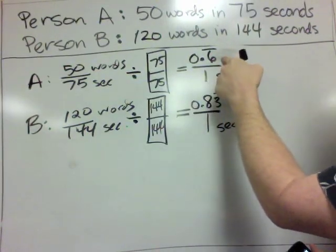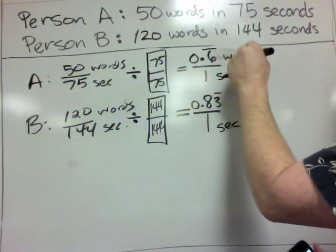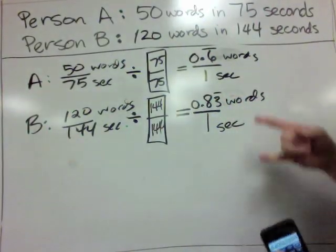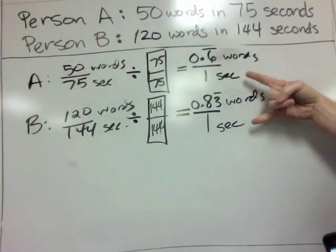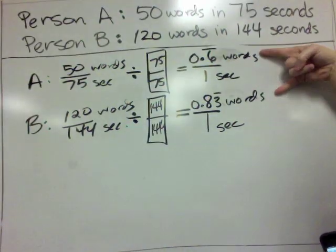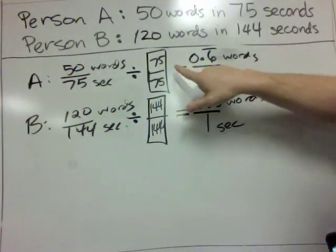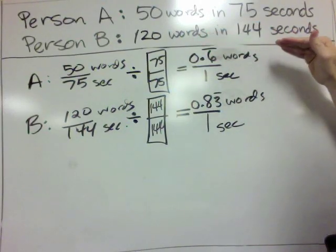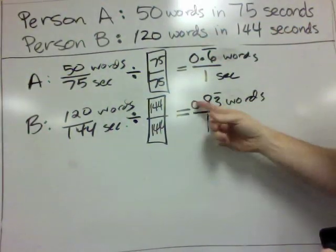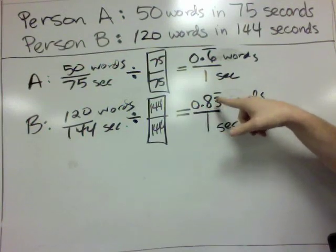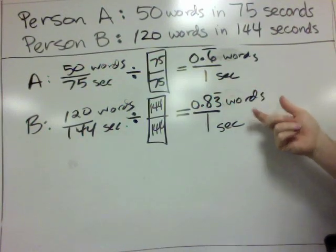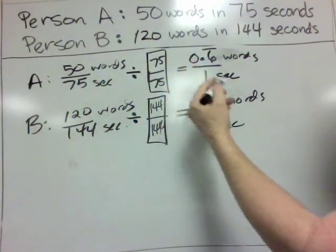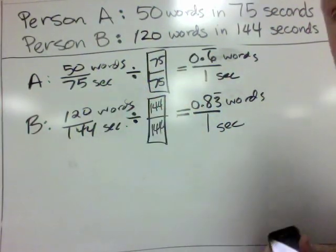Now this 0.6 with a bar stands for words, and this stands for words. And so we can see that each of these people in 1 second, this is how many words they can type. This person can type 0.6 with a bar words, which is really 2 thirds, and then this person can type 0.83 bar words in a second. And we can see that the 0.8 is larger than the 0.6, and so 0.8 is faster.